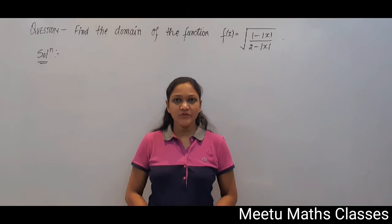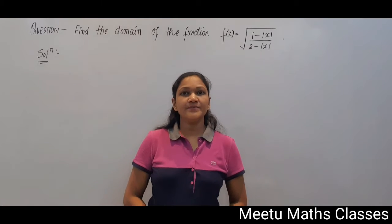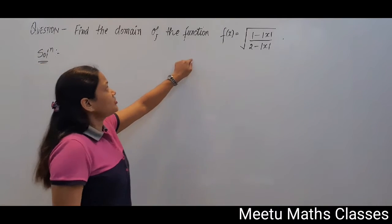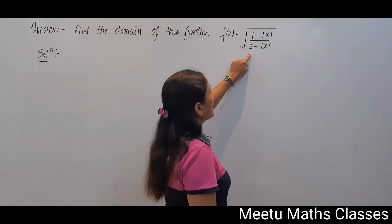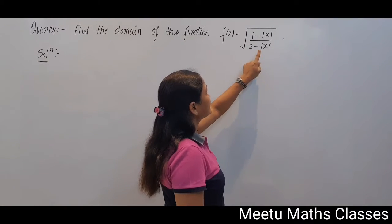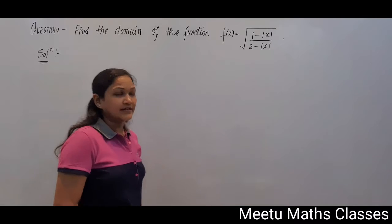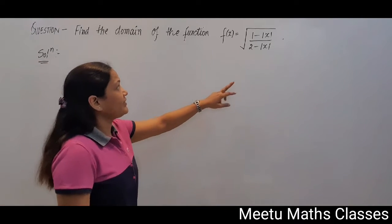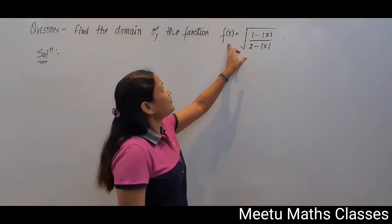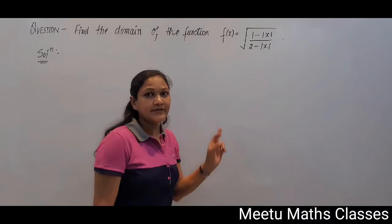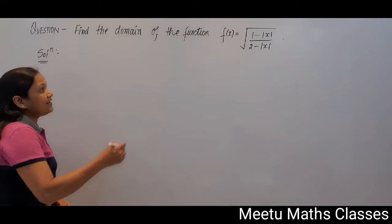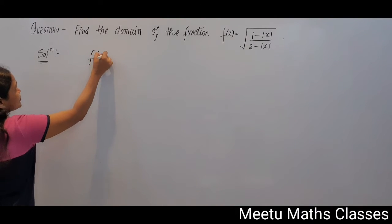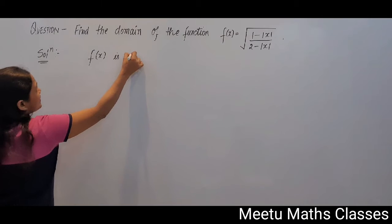Hello students, welcome to me to maths classes. Your question is: find the domain of the function f(x) = √[(1 - |x|) / (2 - |x|)]. Now to find the domain of this function, you have to find those values of x for which your function f(x) takes real values. So let us try to find out where your function f(x) is defined.